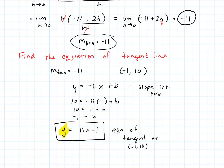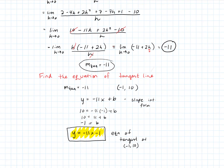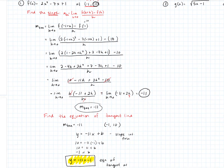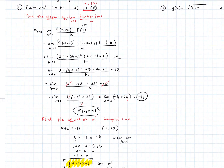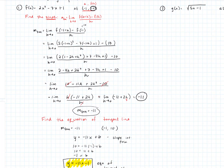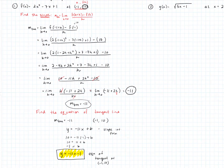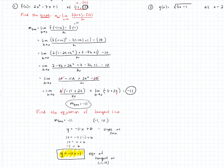Pretty steep negative slope. We didn't actually graph this one, but we could pop it into graphing software — Desmos, a graphing calculator — and see that slope at that point. So there it is. Let's do one more example on this video.